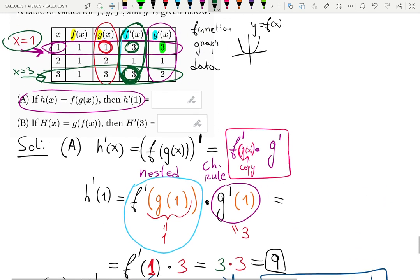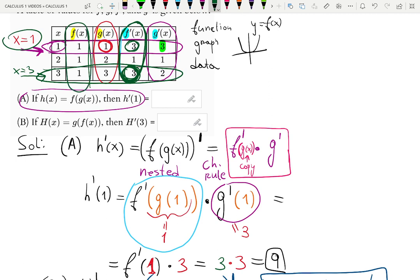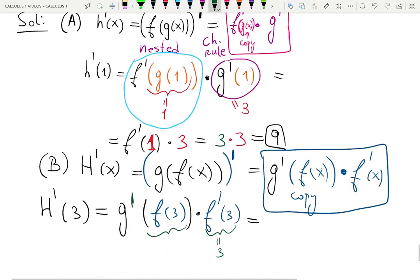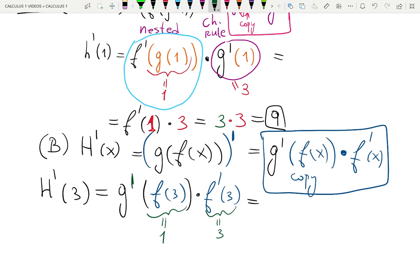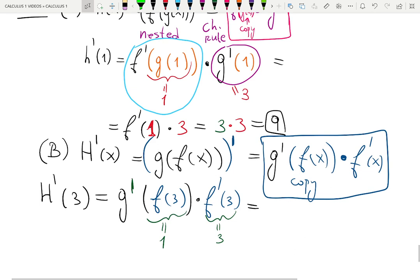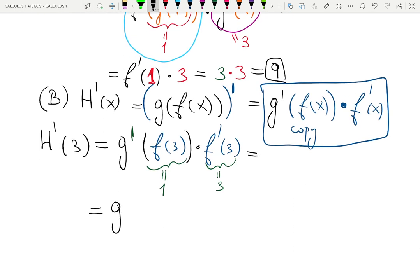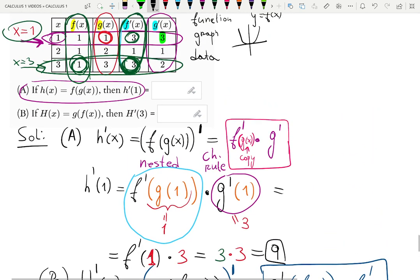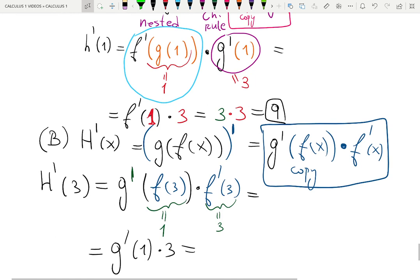Now, I cannot find g prime right away. I need to find f at 3. So now I'm going to the original function f, which we did not use yet. f at 3 is 1. Finally. Some kind of different answer for a change. And now the last step will be to figure out g prime at 1. Let me rewrite it for you. g prime at 1 times 3 equals. g prime is the last column at 1. Takes us back to the first row. And the answer is 3.